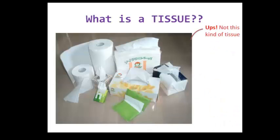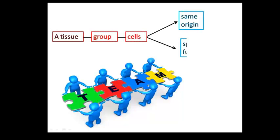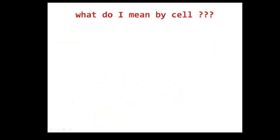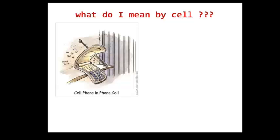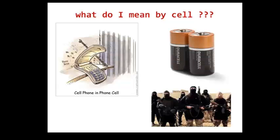But what is a tissue? A tissue is a group of similar cells from the same origin that together carry out a specific function. But what do I mean by cell? Do I mean a cell phone, a prison cell, a battery cell, or a terrorist cell? In fact, I mean none of these. We use the word cell in biology for something totally different.